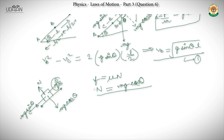We have ma equals mg·sin θ minus friction (kinetic). That will be the net acceleration of the block in the downward direction along the plane.